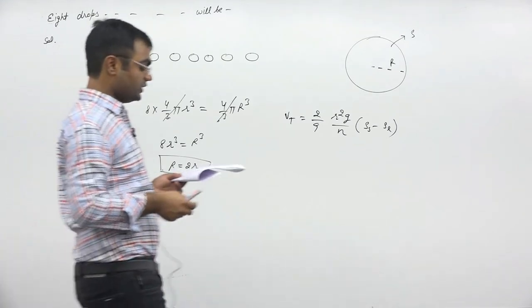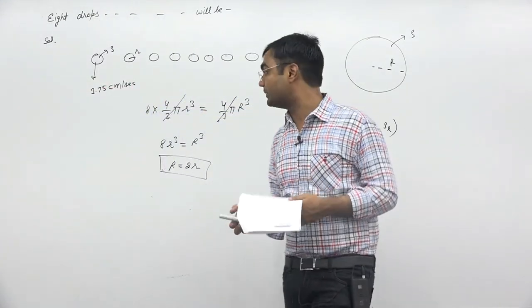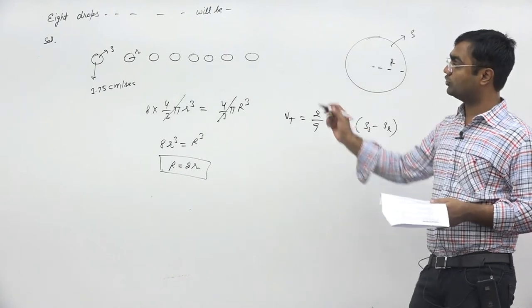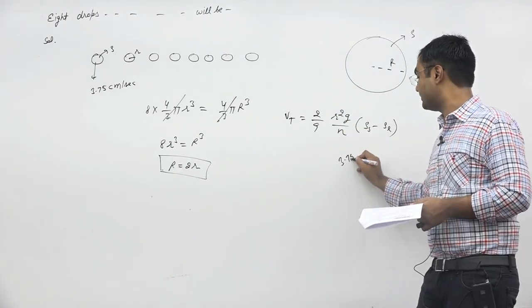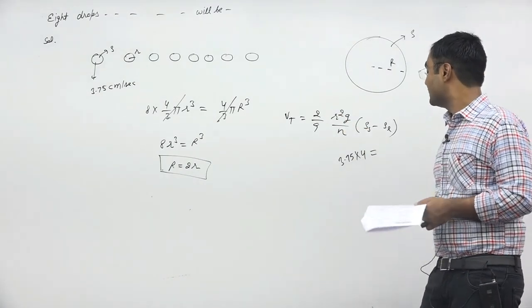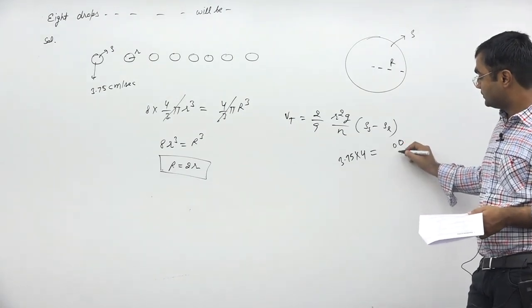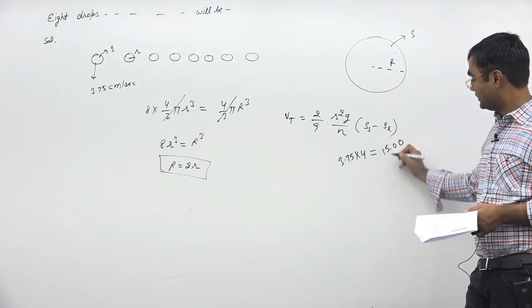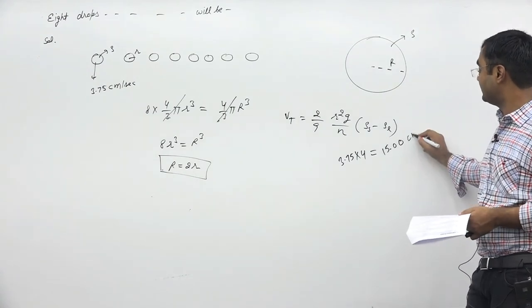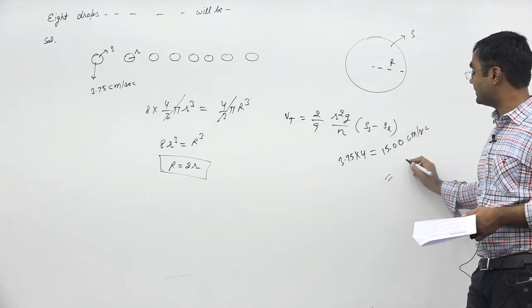In this question, the answer is given in meter per second. First see, this velocity 3.75, multiply it by 4. If you multiply by 4, the answer will be 15.00 centimeter per second. Convert this to meter per second.